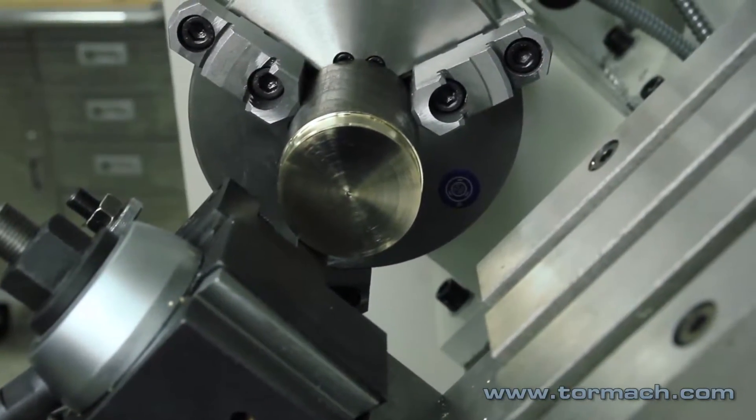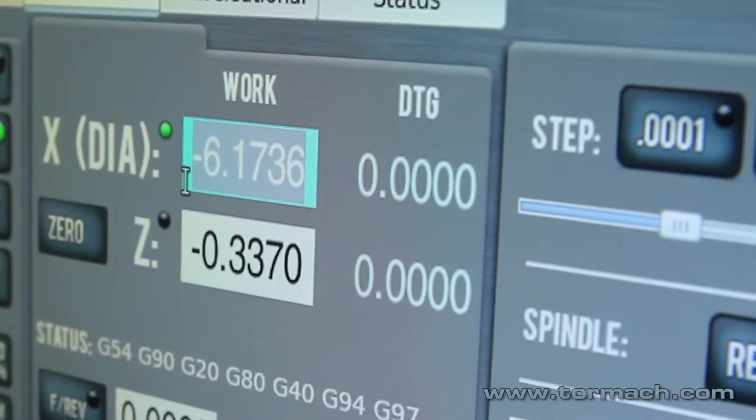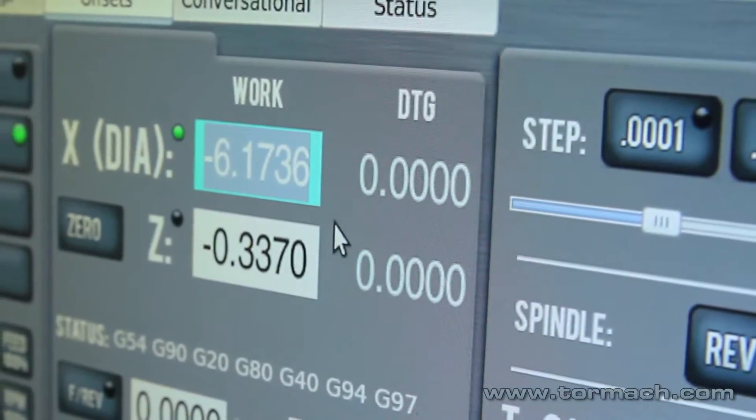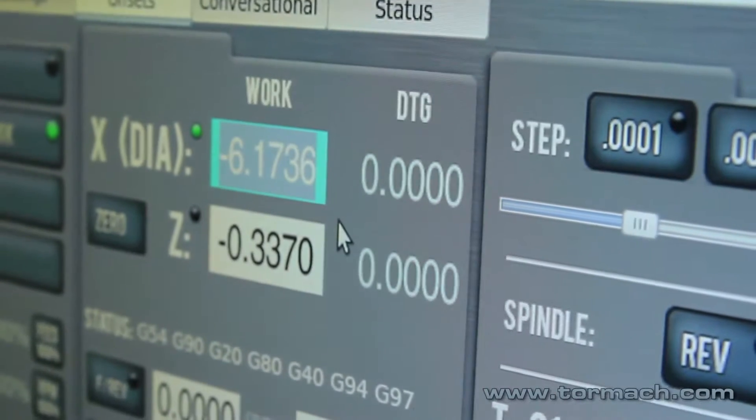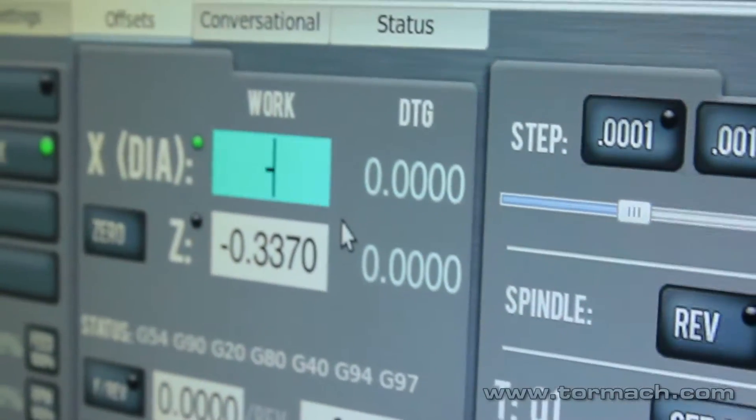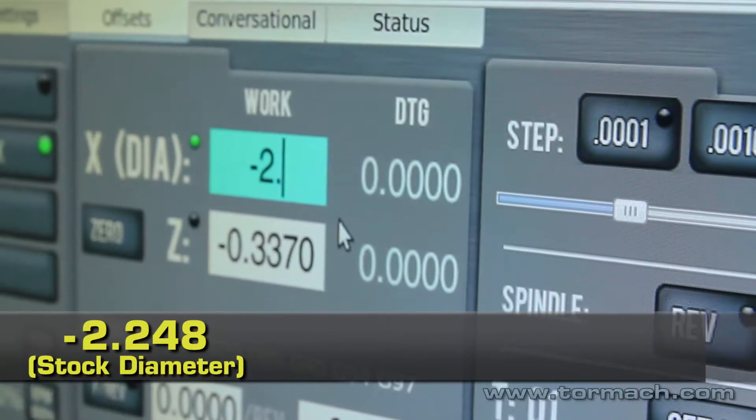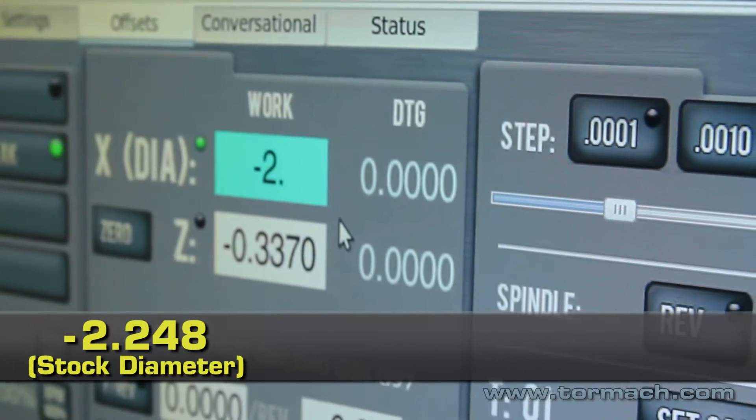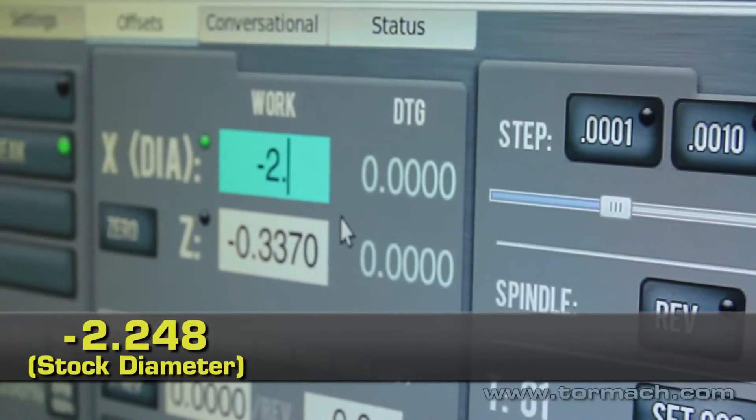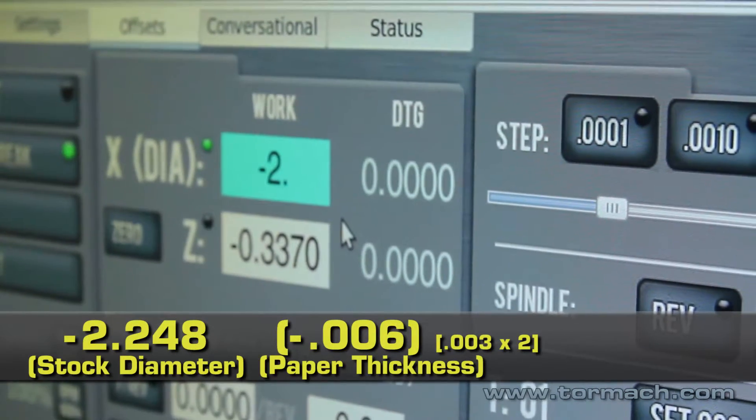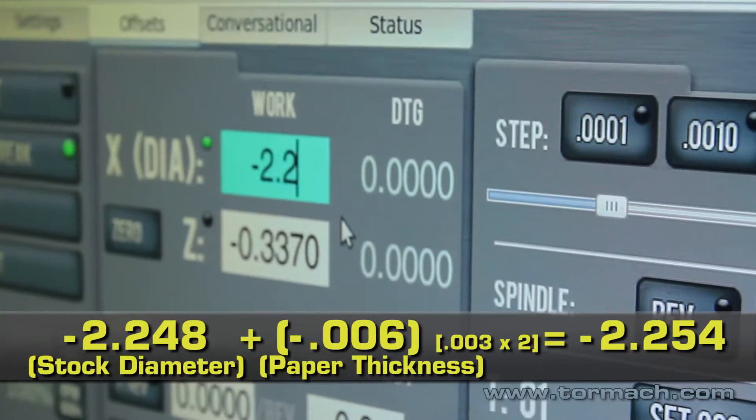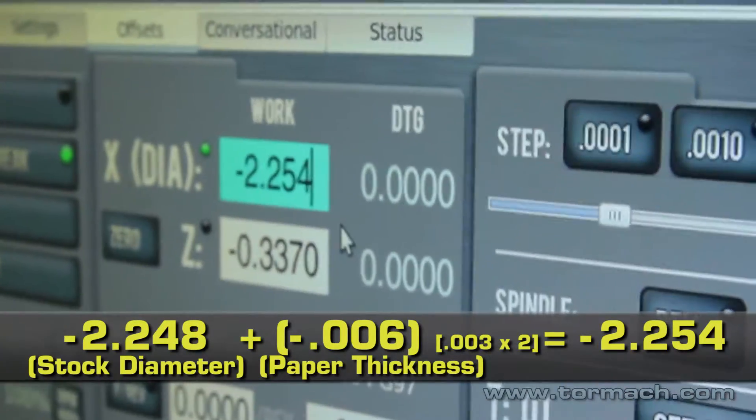All right, then I do the same. I enter that diameter on the X-axis for the work. And seeing we're touching off from the front side of the part or the bottom side, the number's got to be negative. So I'll enter a negative 2 point. The stock's 2 inches 248 thousandths. Then we've got to add the thickness of our paper, which would be another 6 thousandths. So 2 inches 254 thousandths. And enter.